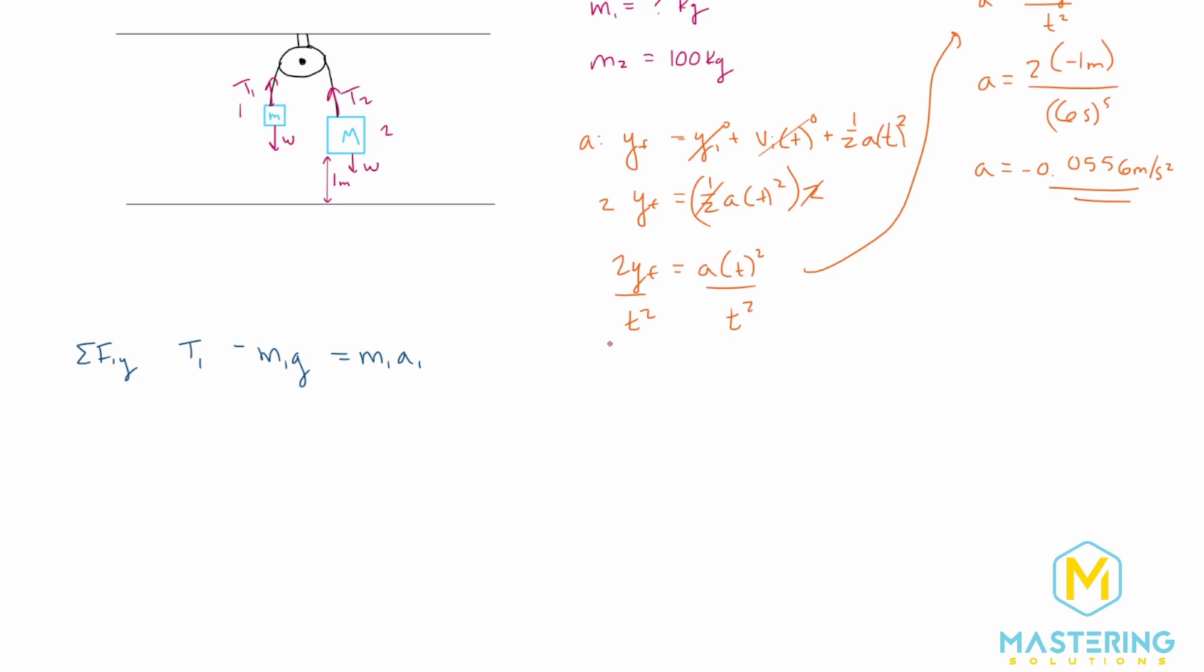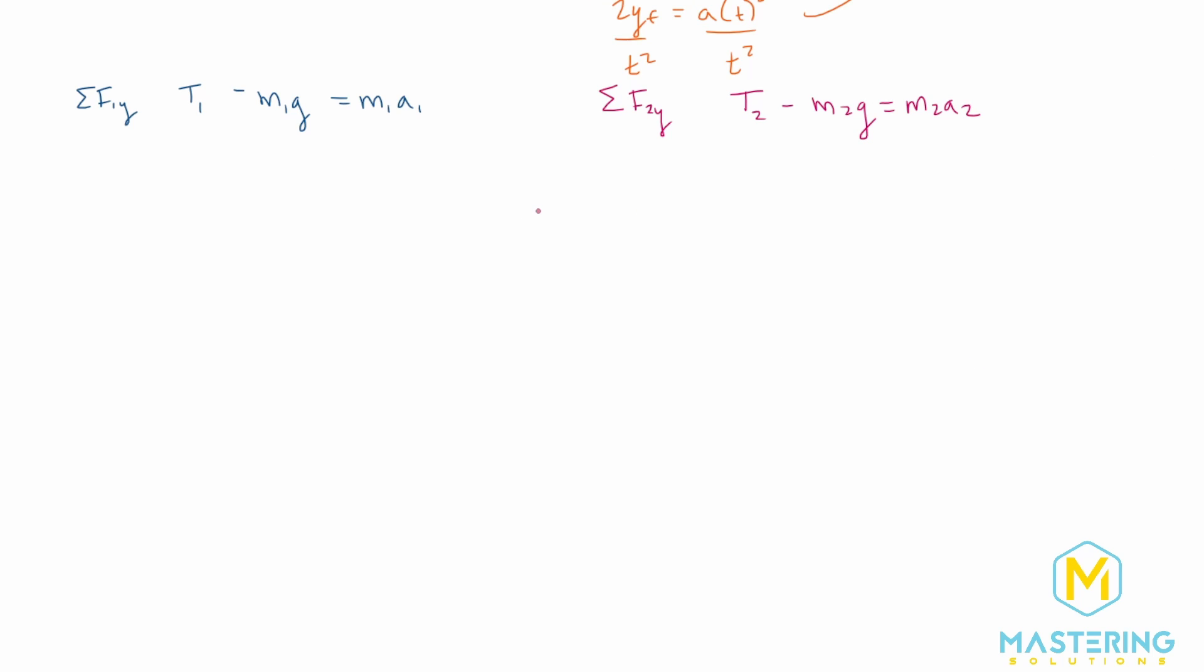And now let's do the same thing for block 2. So sum of the forces, for block 2 in the y direction, we have t2 minus m2g is equal to m2a2. So now we're going to use substitution, of course, but we need to make sure we have all of our signs and everything correct. So acceleration for 1, if it's going up, it's going in the positive y direction.